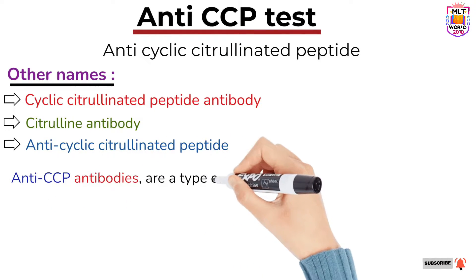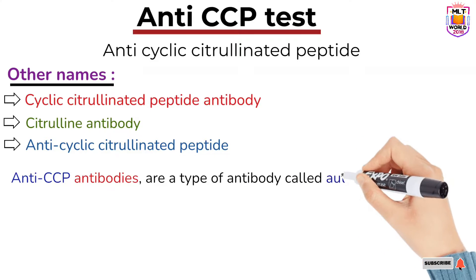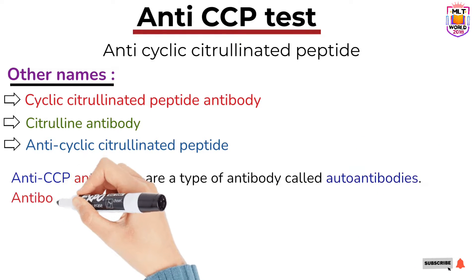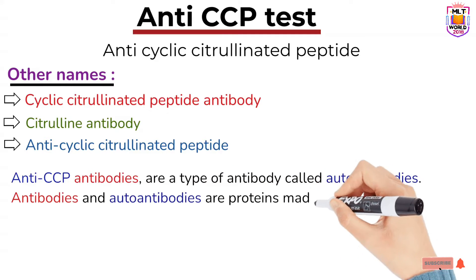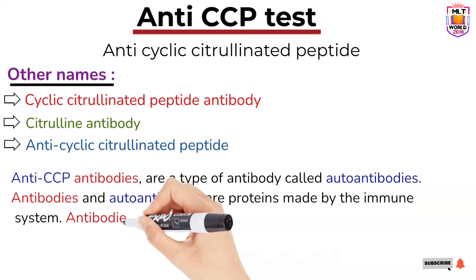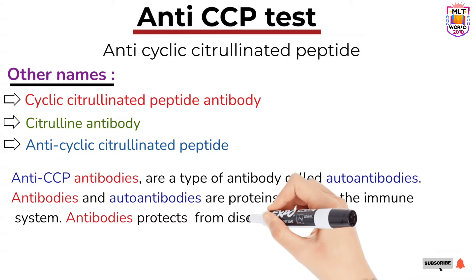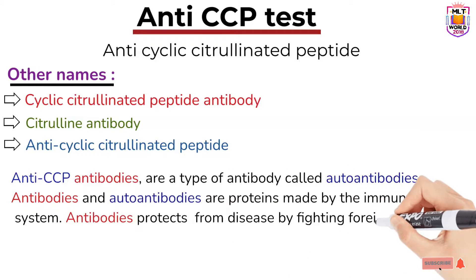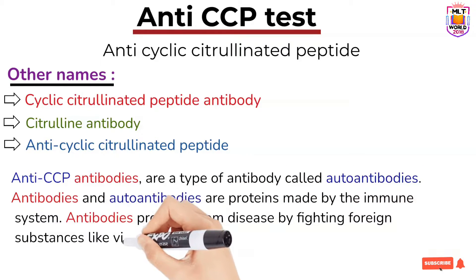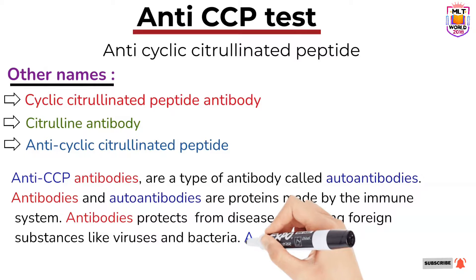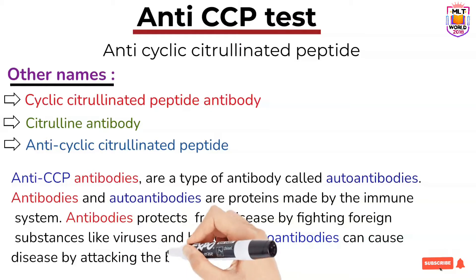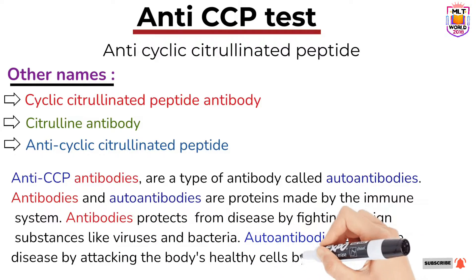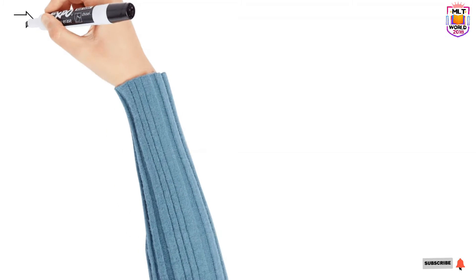First, let's understand what anti-CCP antibodies are. By name it is clear that these are antibodies, but specifically they are called autoantibodies. Both antibodies and autoantibodies are proteins made by our immune system. Regular antibodies protect our body from bacteria, viruses, and other foreign particles, but autoantibodies attack our own healthy cells, tissues, or organs — that's why they are called autoantibodies.